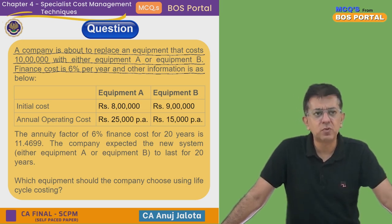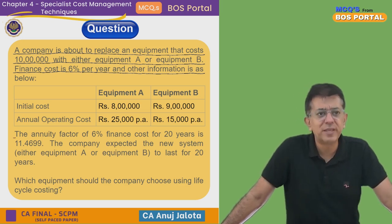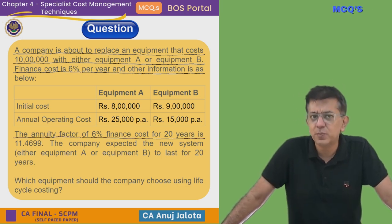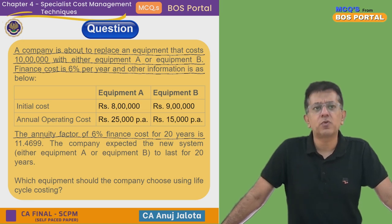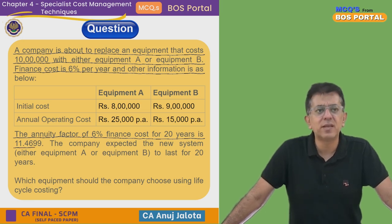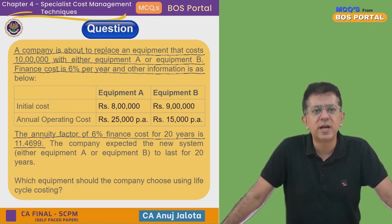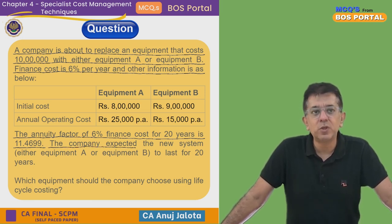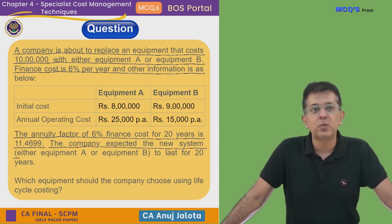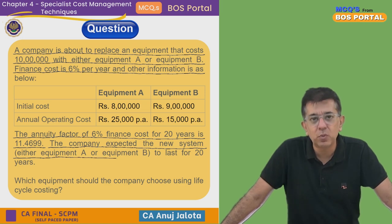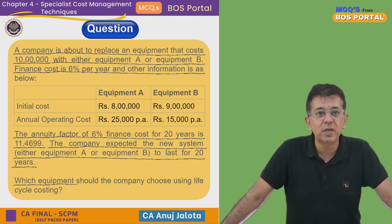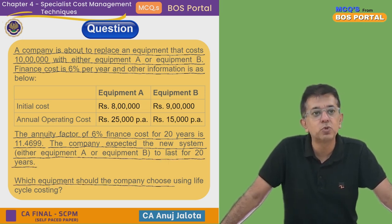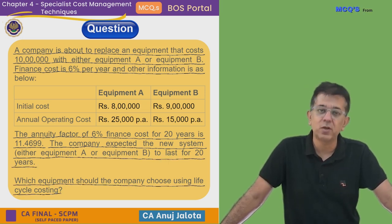The annuity factor at six percent finance cost for 20 years is 11.4699 — this is essentially a cumulative discounting factor for 20 years at six percent. The company expects the new system, either Equipment A or B, to last for 20 years. Which equipment should the company choose using lifecycle costing?